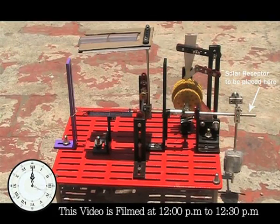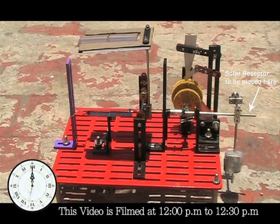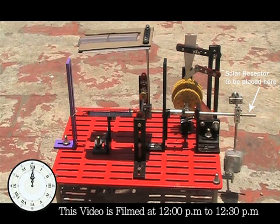The smart sun tracking mechanism is designed and constructed to enable the solar receptor to track the sun from 8 am to 4 pm.